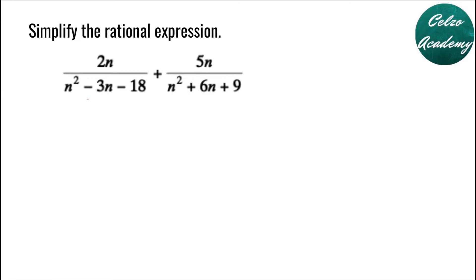Adding rational expressions is very similar to adding fractions. First step is to find the LCD or the least common denominator. And for us to do that, we need to factor out first both denominators.